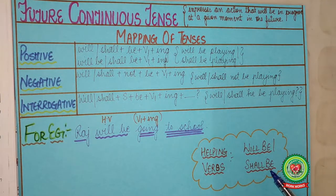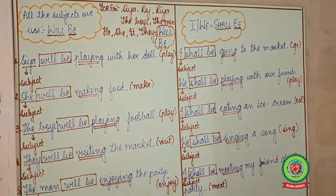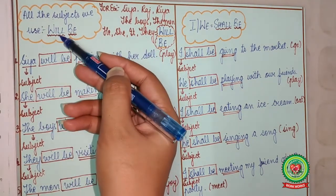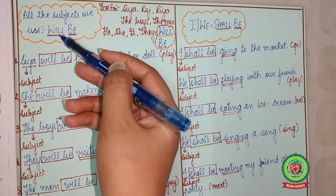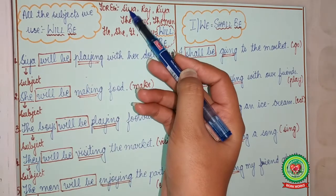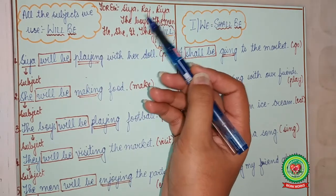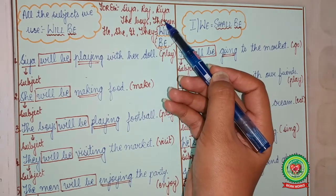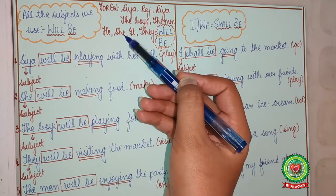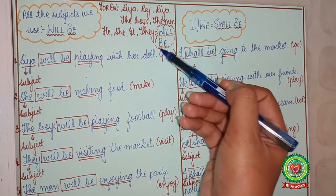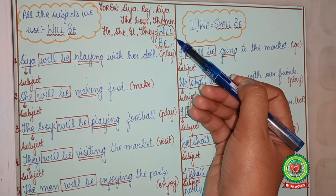Now, where to use will be and shall be? With all the subjects — Sia, Raj, Ria, the boys, the men, he, she, it, they — we use will be.